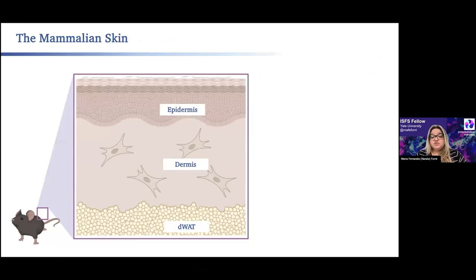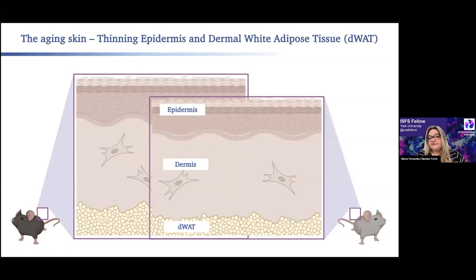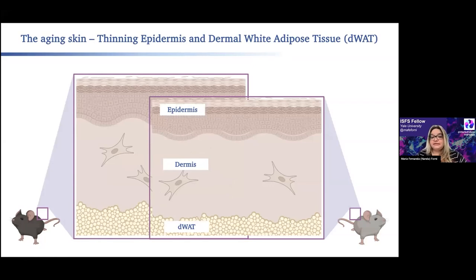Let me give a brief introduction to the different layers of the skin. The outer layer is the epidermal compartment, followed by the dermal compartment. Some cells that haven't been explored much are the adipocytes in the skin — they exist in the dermal white adipose tissue. With aging, two main things happen in this tissue: we have not only a thinning of the epidermis, but this dermal white compartment presents a diminished number of adipocytes and a diminished capacity to undergo lipolysis — the mobilization of lipids inside these adipocytes.